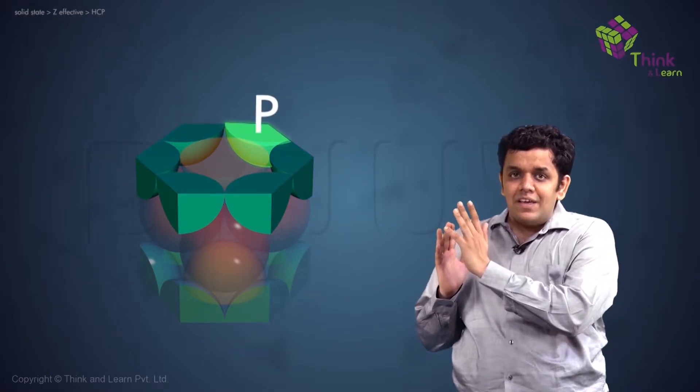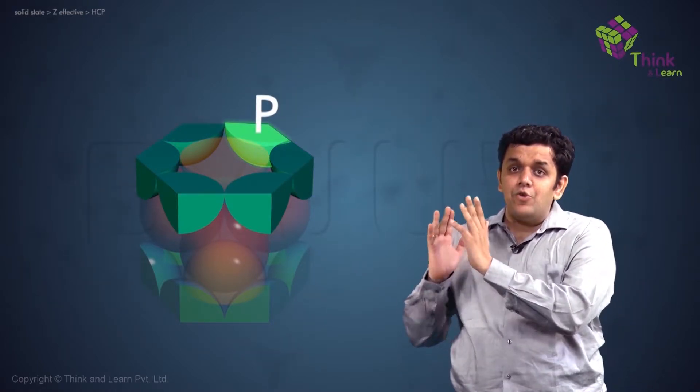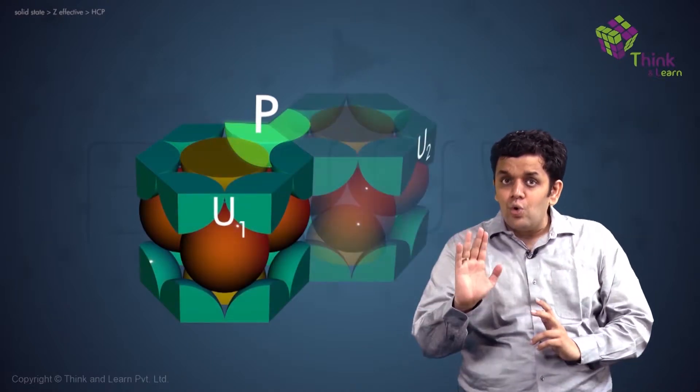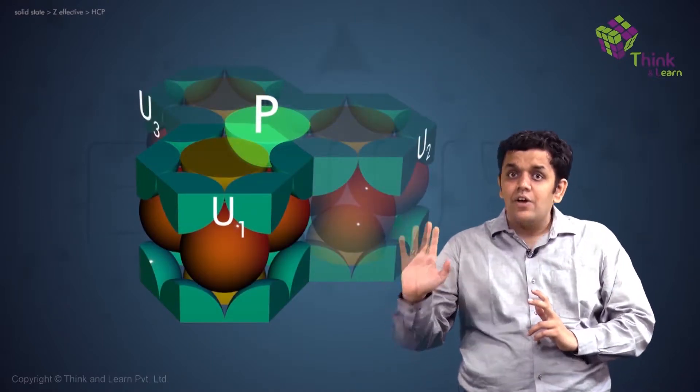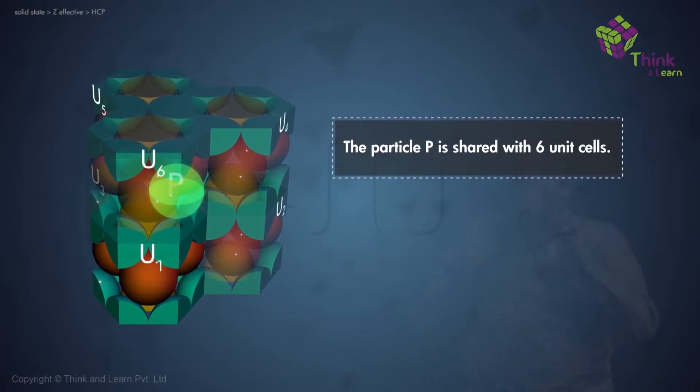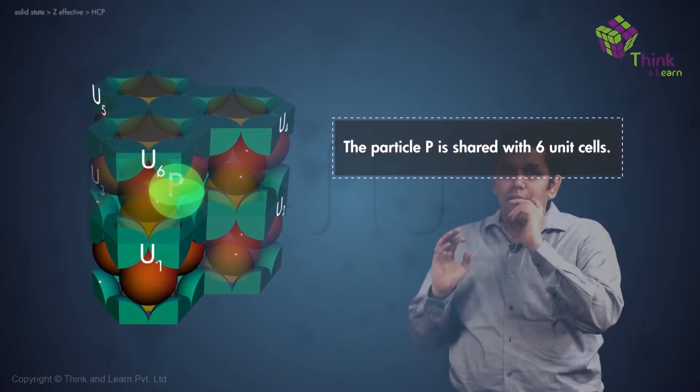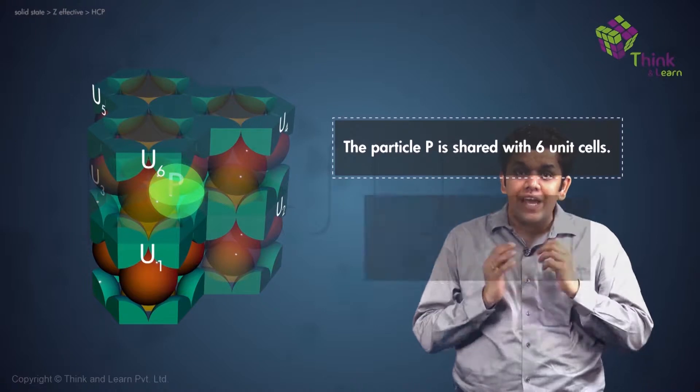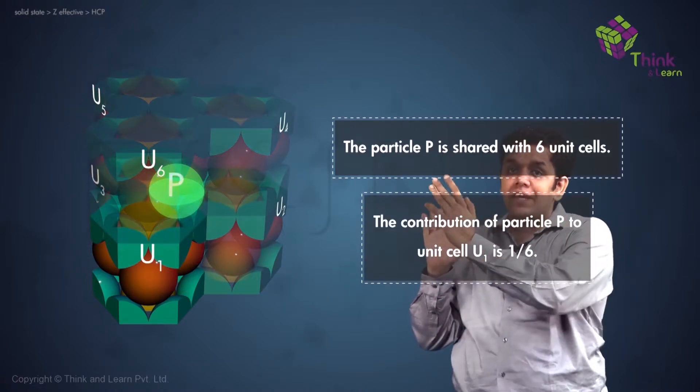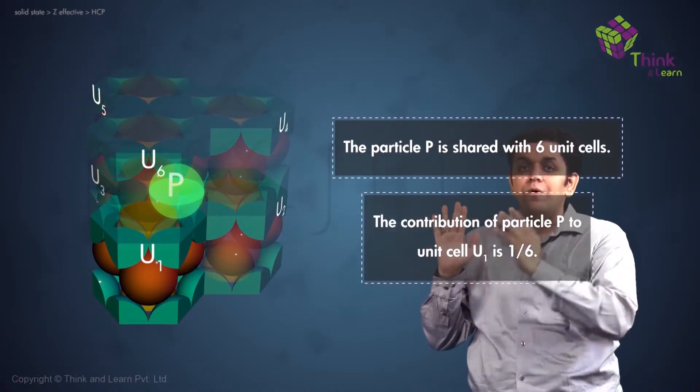Now the particle P is being shared between unit cells U1, U2, U3 and U4, U5 and U6. Totally six unit cells the particle is getting shared between. So hence, the contribution of particle P towards unit cell U1 would be one-sixth.